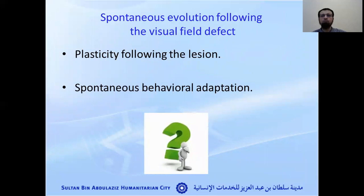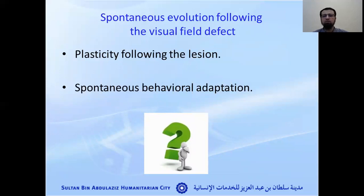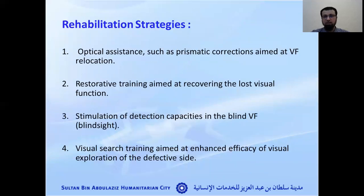Regarding spontaneous recovery following visual field defect — is it enough? Researchers found that brain plasticity and spontaneous behavioral adaptation are not sufficient. We need to implement strategies such as optical assistance, restorative training, stimulation of detection capacities on the visual field, and visual searching training.